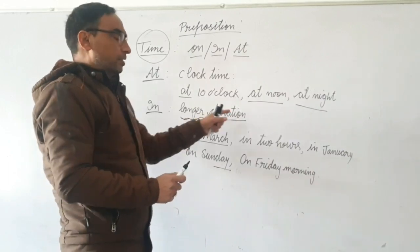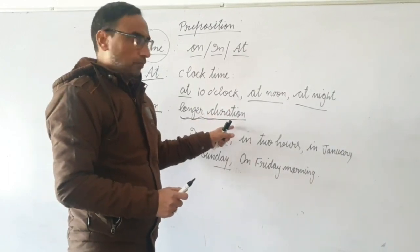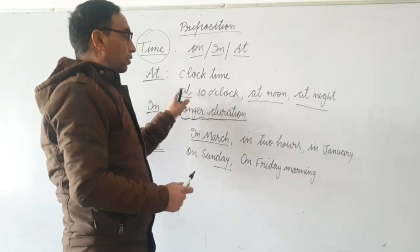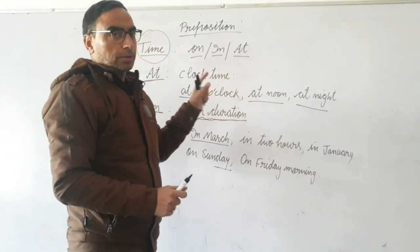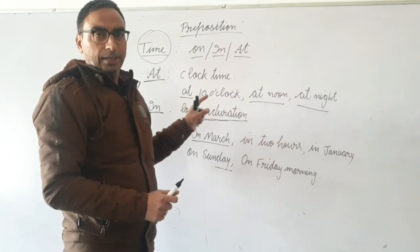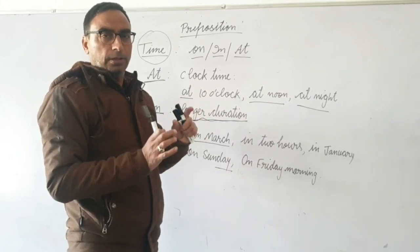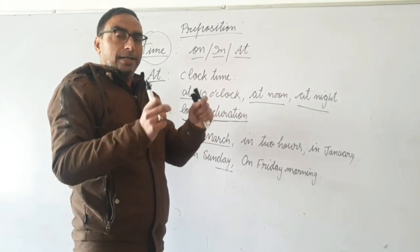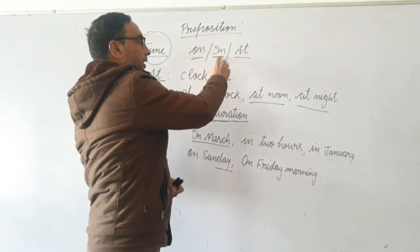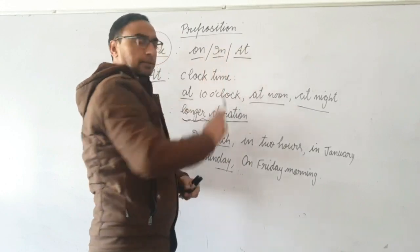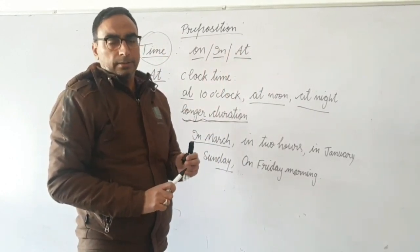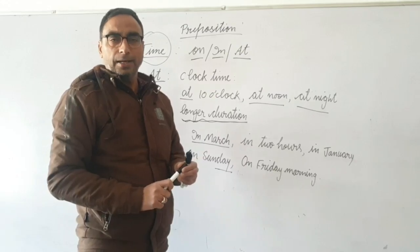To summarize: when there is a day, use 'on'; when there is a longer duration, use 'in'; and when talking about clock time, use 'at'. Today we focused only on time and the three prepositions: on, in, and at. For more details, subscribe to my channel. Bye!